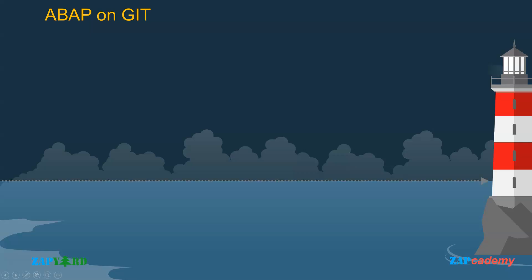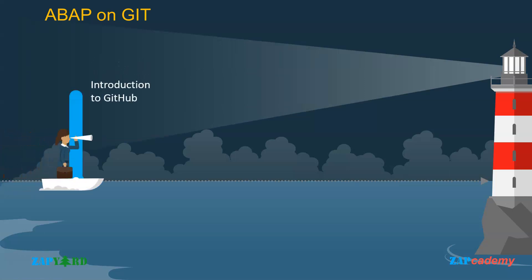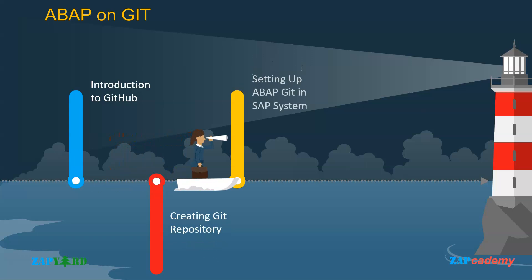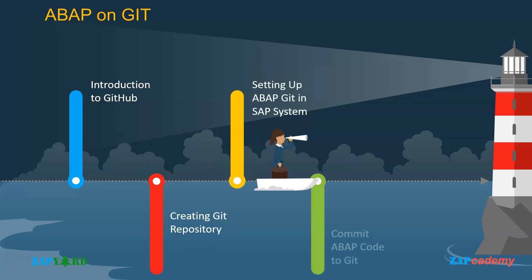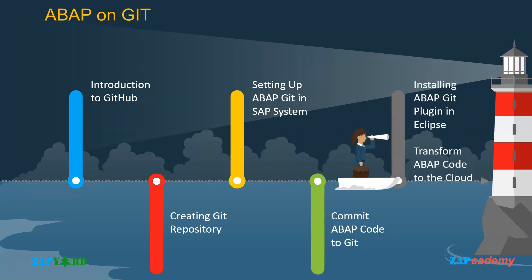Before we wrap up the course, we will learn about the non-SAP project ABAP on Git. ABAP on Git is an open source project used as an ABAP client for Git. Supported from ABAP 7.02 and above, like any other Git projects, ABAP Git allows version control of code committed to the repository. We will introduce you to GitHub, teach you how to create a Git repository, and set up ABAP Git in your SAP system. We will show you how to commit ABAP code to Git, install ABAP Git plugins in Eclipse, and transform ABAP code to the cloud. In short, we can use ABAP on Git to export and import SAP development objects between SAP systems.